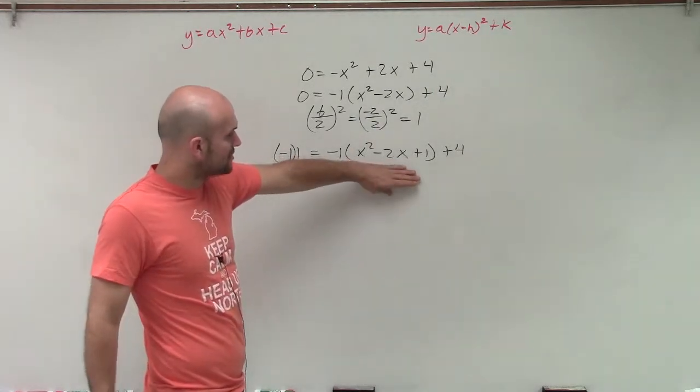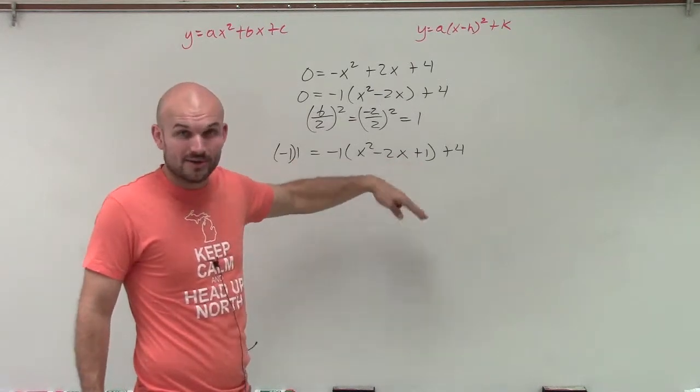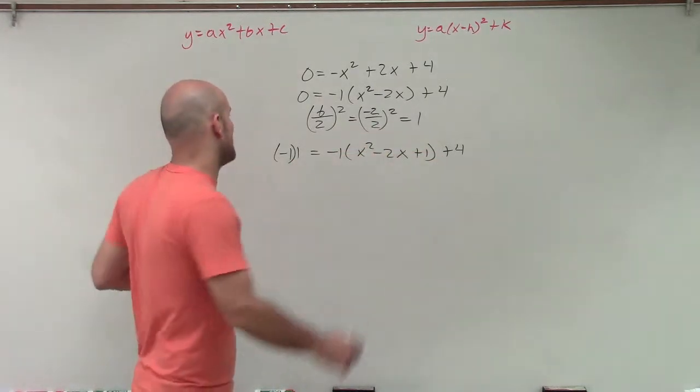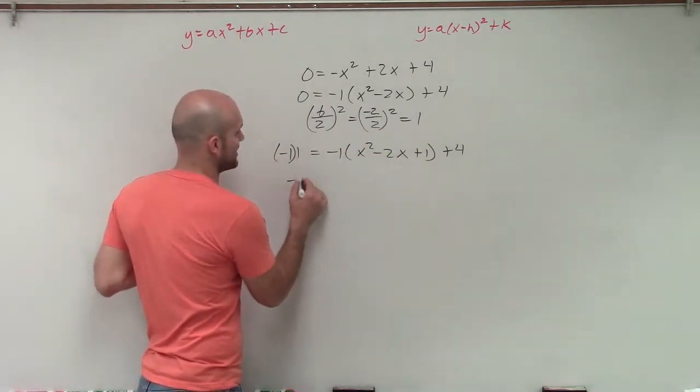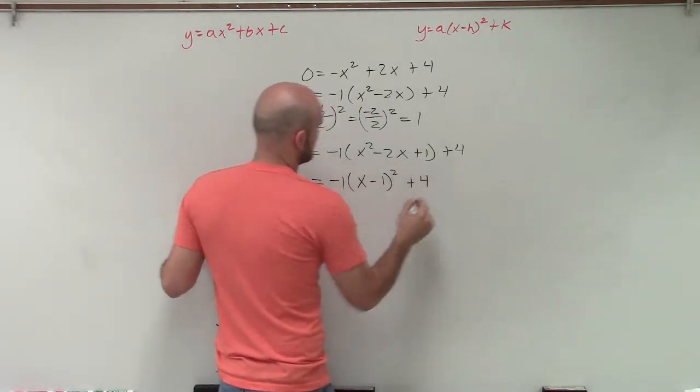Now I see my perfect square trinomial. Now I can factor this down to my binomial squared. So negative 1 times 1 is negative 1, equals negative 1 times x minus 1 squared plus 4.